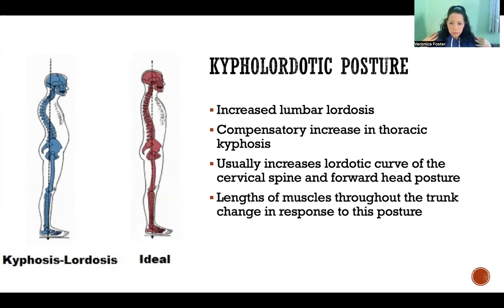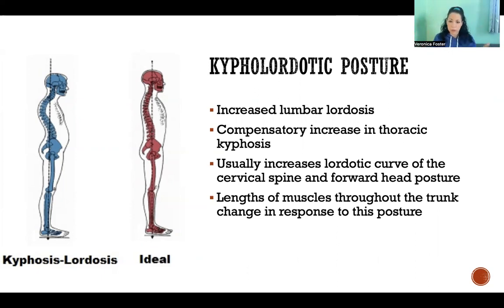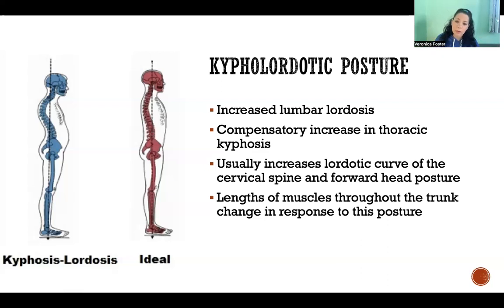If we have an increased kyphotic curve, we're rounding forward in the thoracic region — where the ribs attach, essentially the midsection of the spine. If we're hunched or rounded forward that way, the neck has to arch in the opposite direction to keep the head facing forward. Otherwise, the exaggerated kyphotic curve in the thoracic spine would have us looking down. Since we need to look where we're going, we arch the neck up, resulting in lordosis in the cervical spine. This usually also comes with forward head posture.